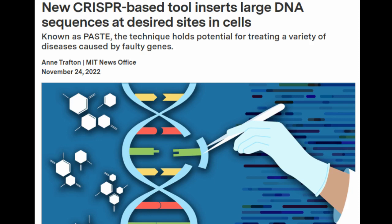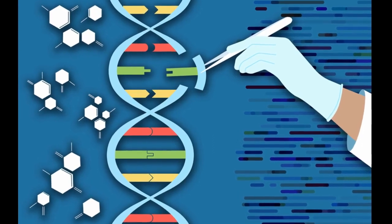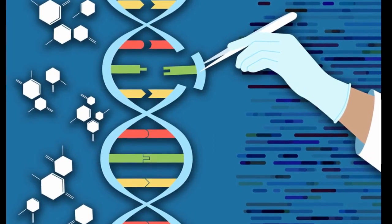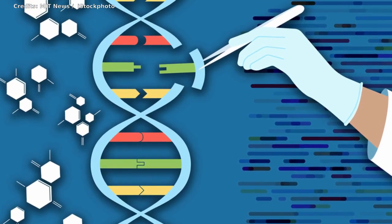The new tool combines the precise targeting of CRISPR-Cas9, a set of molecules originally derived from bacterial defense systems, with enzymes called integrases, which viruses use to insert their own genetic material into bacterial genomes. Just like CRISPR, these integrases come from the ongoing battle between bacteria and the viruses that infect them.